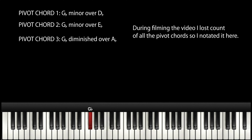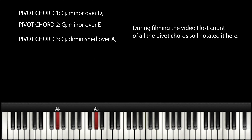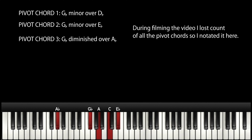Over five gives you a dominant chord with a flat nine. The nine for A-flat would be B-flat, and we're going to flatten that to make it a flat nine. So this is your pivot chord to go back home.